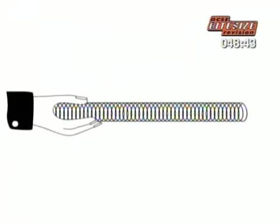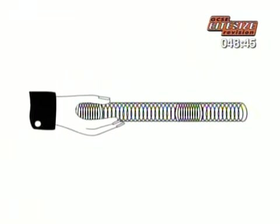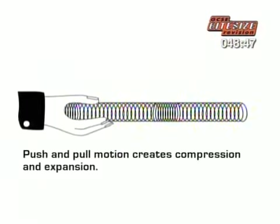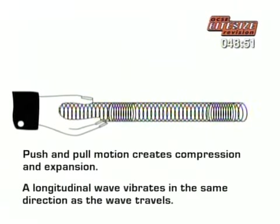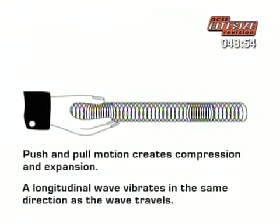A slinky spring can carry another kind of wave. If you push and pull the end of the slinky, you get compression and expansion of the spring. This is called a longitudinal wave. The vibration is in the same direction as the energy is travelling.